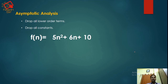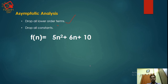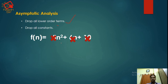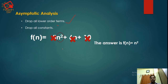Let's see an example. Suppose there is a function 5n² + 6n + 10. In step one, we drop all lower-order terms: here n² and n are the terms, so 6n is the lower-order term and we drop it. In step two, we drop all constants: 5 and 10 are constants, so we drop them. The result is n².